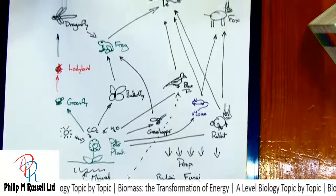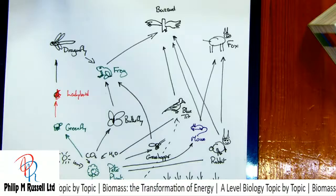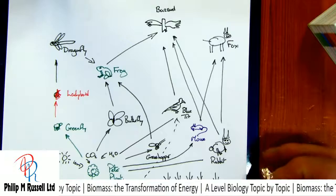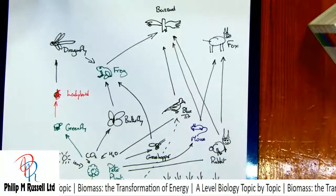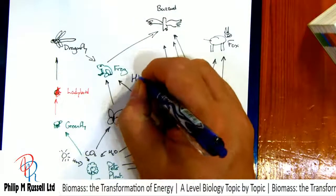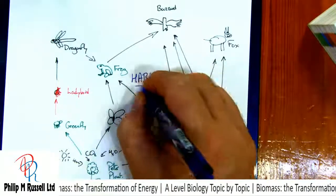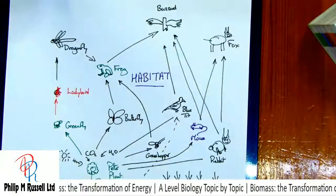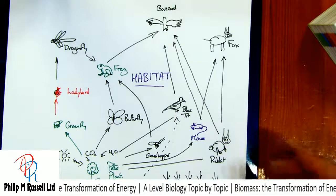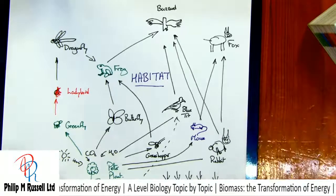One of these food chains is just a very simplified look at something, whereas the real thing is a complete food web. This is the reality of the situation — all of these live in some sort of habitat, which is my back garden.